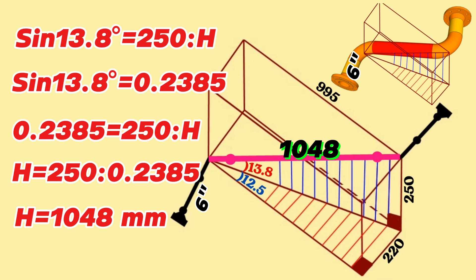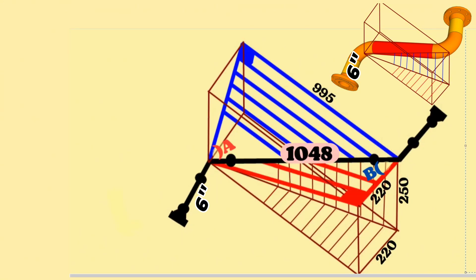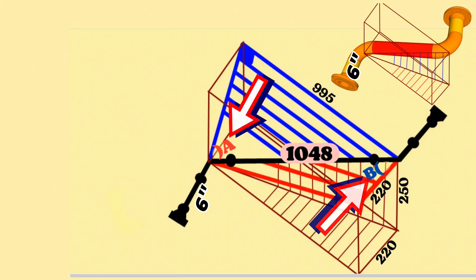If we subtract the lengths of the cut elbows and the gaps for welding from this total length, we can find the length of the pipe section. Now let's calculate the cut elbow angles. First we complete each elbow from the back to a right angle triangle, provided that they are on the same plane. Let's paint one with blue color and the other with red color, and mark the lower elbow cutting angle with A and the upper elbow cutting angle with B.